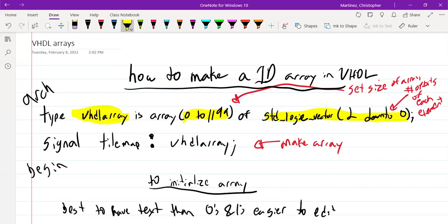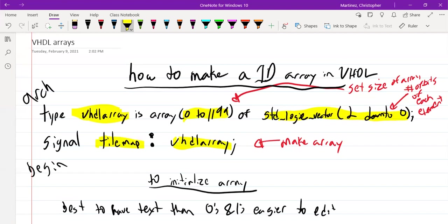Now this has only created the data type that we needed. So now we actually need to make the array. To do that, we're going to use the signal. Here I've given it the name tile_map, because we're going to be using it in the sprite game. I'm going to say the tile_map is of array VHDL_array. Now this just makes an array for you. There's no values in the array. We're going to be looking at how to access an array because that's all we need for this first part of the project.